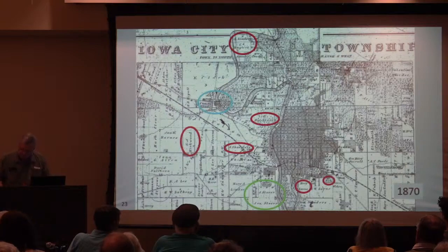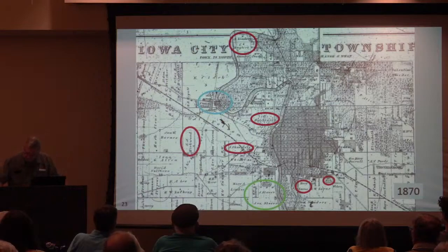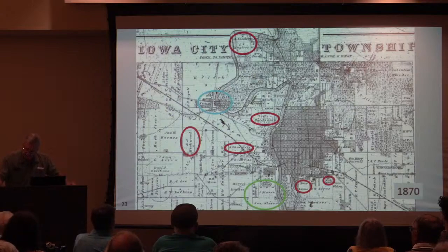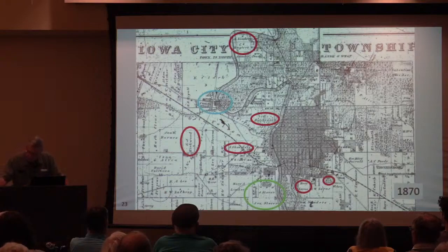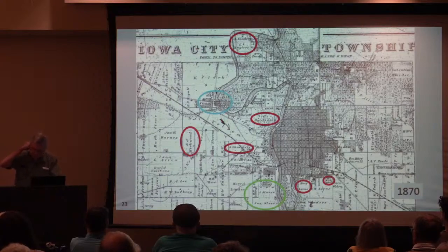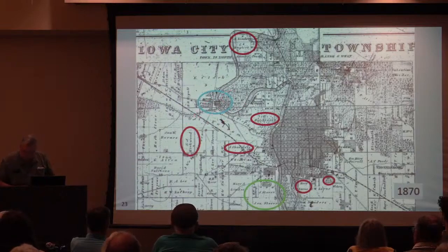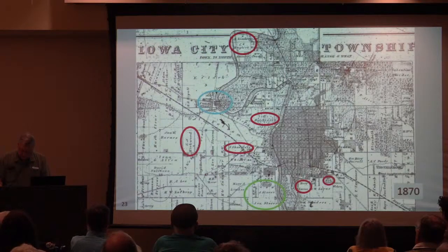I've circled names of property owners in red that remain associated with Iowa City today — names like Kirkwood, Sharpless, Hutchinson, Angler, Linder, and Lucas. The property circled in green was that of a J. Stover, a name that may be linked to the later Russell Stover Candy Company. The Stover property would become the Iowa City Airport site. Tiny Coralville I've circled in blue — significantly, there was a dam there with three associated mills marked as paper, flour, and woolen.